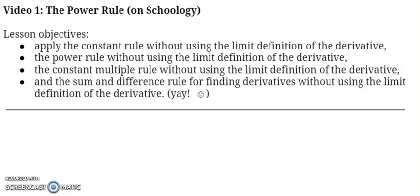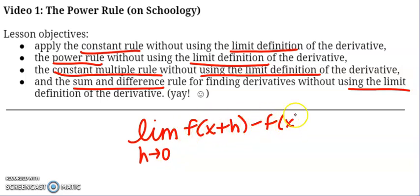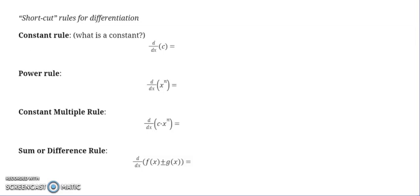All right, today we are going to learn about some shortcuts for finding the derivative, specifically focused on something called the power rule. But we're going to talk about taking the derivative of a constant without that limit definition, the power rule without the limit definition, the constant multiple rule without the limit definition, and the sum and difference rule without using the limit definition. So the idea of this limit as h approaches 0, f of x plus h minus f of x all over h being equal to the derivative of f at x, that's still true, it's just that over time we've seen some patterns emerge from doing this limit process over and over and over, so let's summarize those patterns. Shortcuts, aka the patterns that emerge in mathematics.